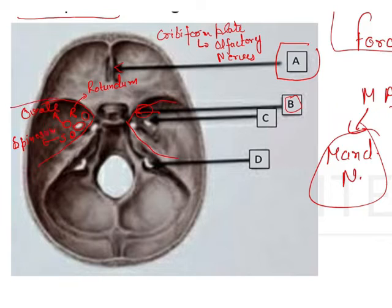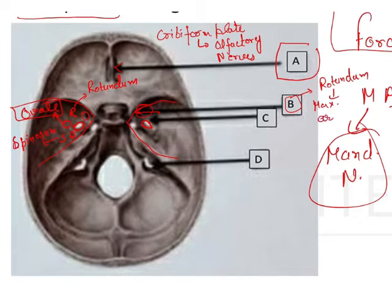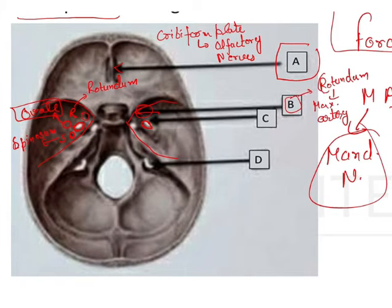Now we have to find out the foramen ovale. B is going to be foramen rotundum, which gives passage to the maxillary nerve. You can remember this by 'maximum round' — R stands for round, so maximum round means maxillary nerve — that's how you remember it.